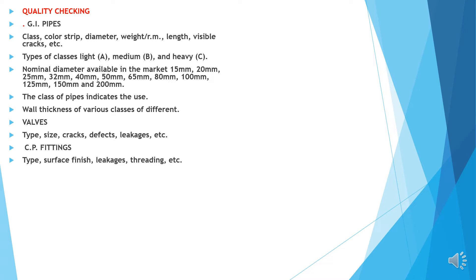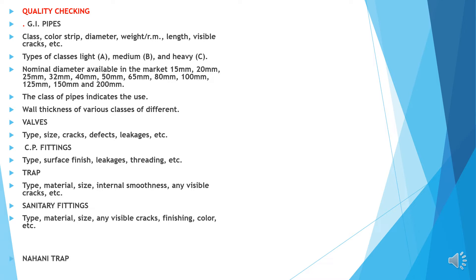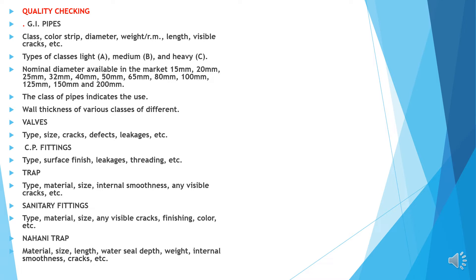Trap: check type, material, size, horizontal smoothness, any visible cracks, etc. Sanitary fittings: check type, material, size, any visible cracks, finishing, color, etc. Nahani trap: check material, size, length, water seal, depth, etc. P-trap and S-trap: this is a P-trap and this is an S-trap — check material, sizes, water seal, depth, etc.